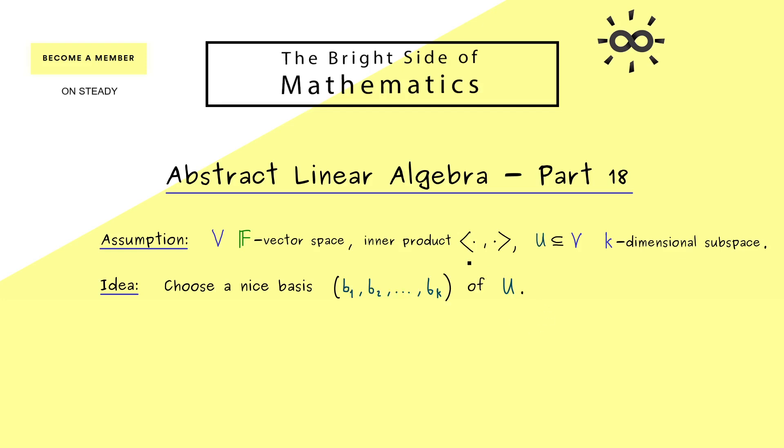Now this could mean anything, but since we have an inner product here we already know what nice could mean. Since we can measure angles we could claim that the angle between two basis vectors is the right one. So we want orthogonality for the basis vectors. And we already know this one we can put into a nice formula. In particular if we have b₁ and b₂ here we would write that the inner product with b₁ and b₂ is zero.